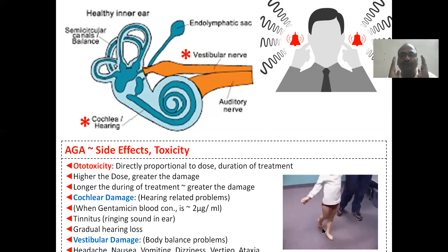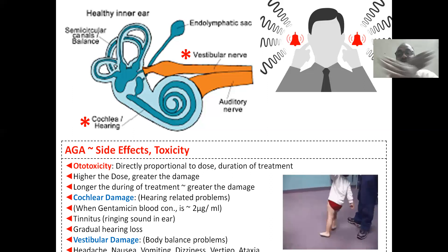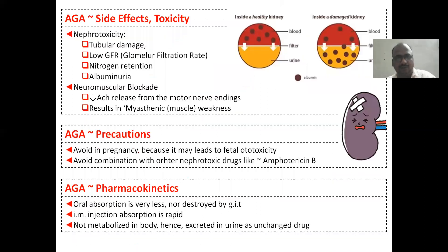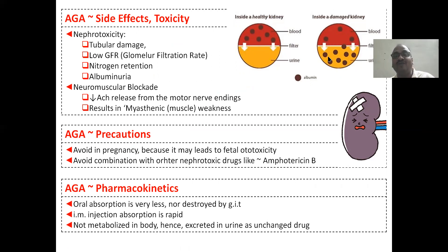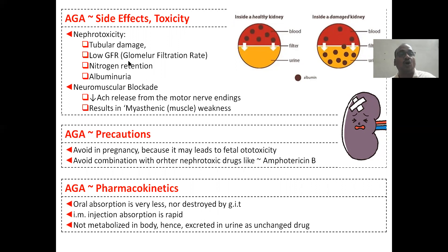Side effects and toxicity also include nephrotoxicity. Albuminuria — albumin will be filtered because the kidney filtration system is damaged, so albumin present in the blood will leak into the urine. Also: low glomerular filtration rate, nitrogen retention, tubular damage, and neuromuscular blockage — muscle weakness, myasthenia. All these are very, very important and you have to write in the examination.